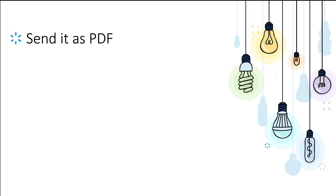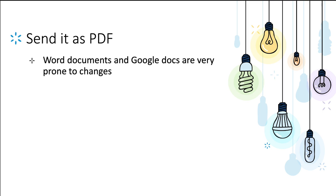If you're sending your CV for an observership, elective, masters, or other positions outside of CaRMS, always make sure to send it as a PDF document. If you send it as a Word document, it can really change how things are arranged. Make sure to send your CV as a PDF for observerships, masters, or other applications other than CaRMS. Word documents and Google Docs are very prone to formatting changes.